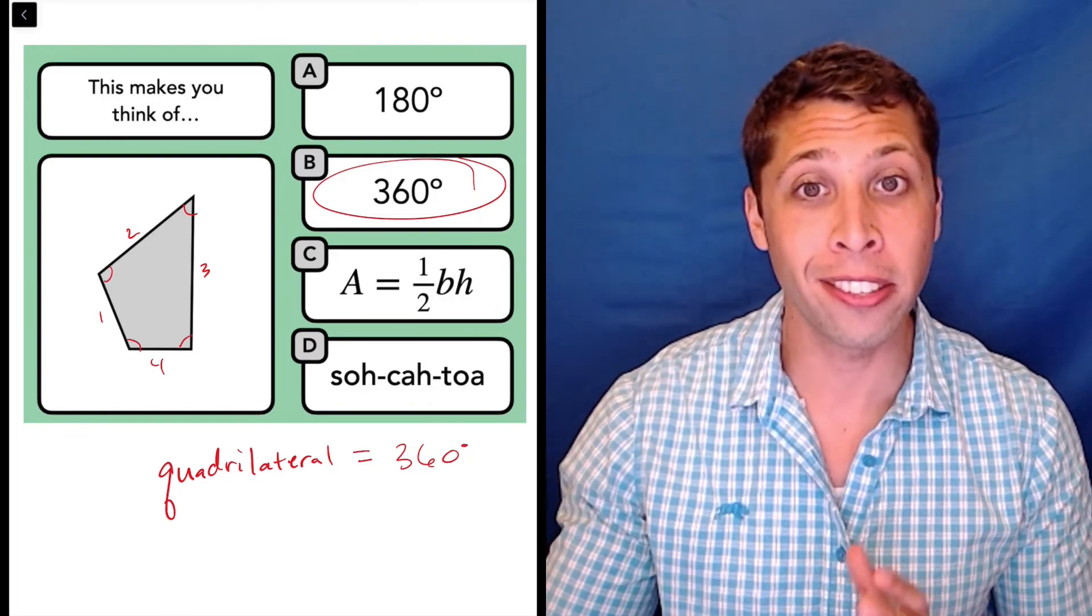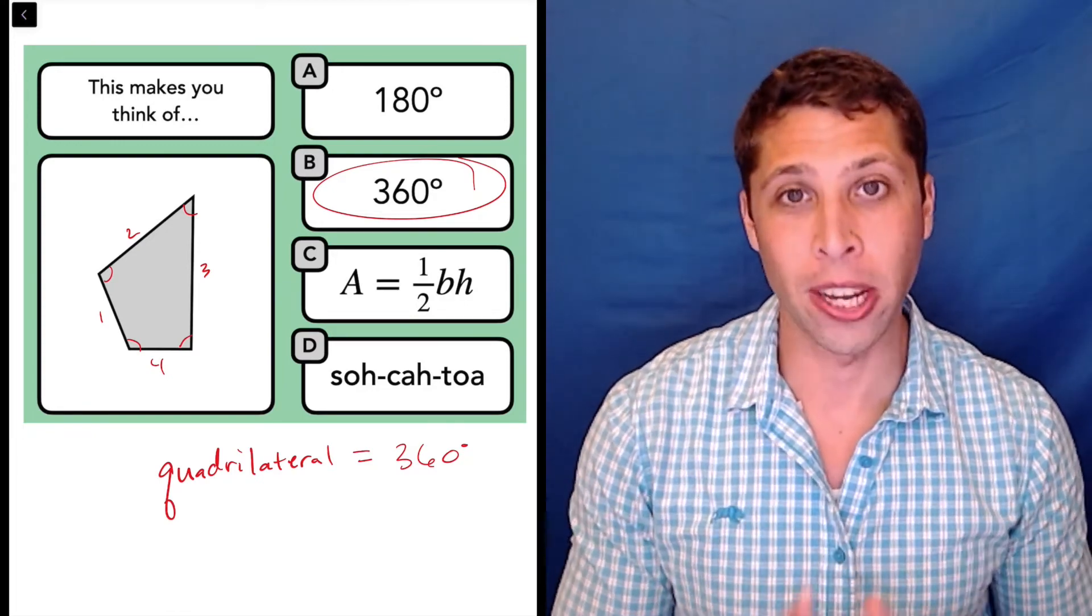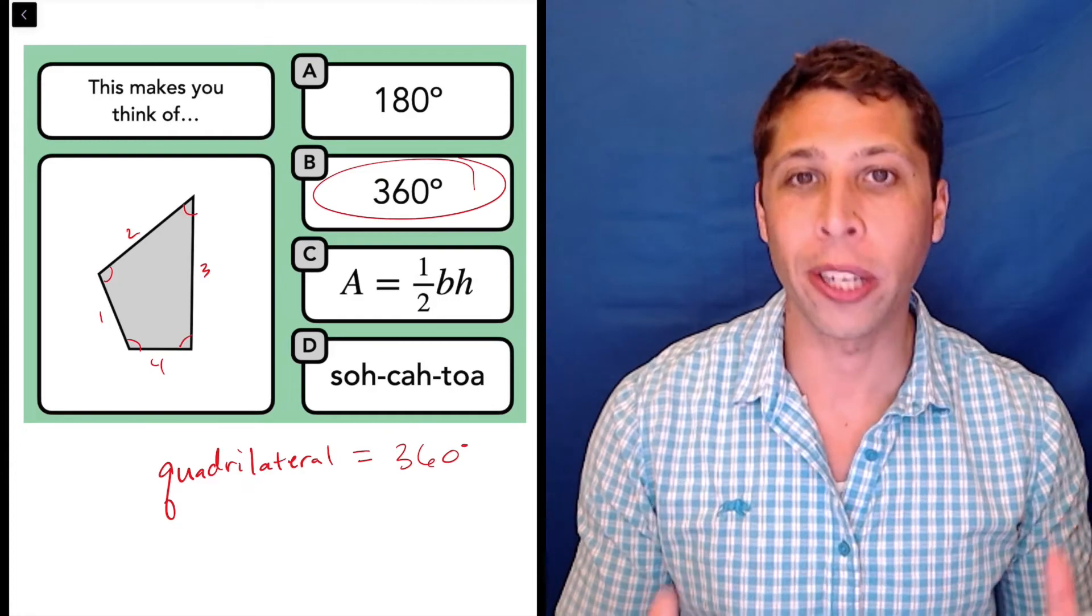Triangles have 180 degrees, four-sided figures have 360 degrees, no matter how weird they look.